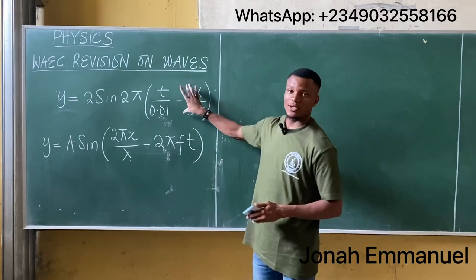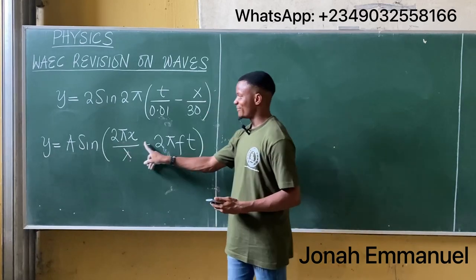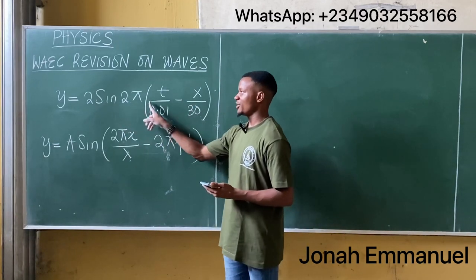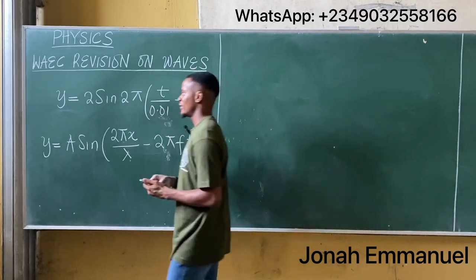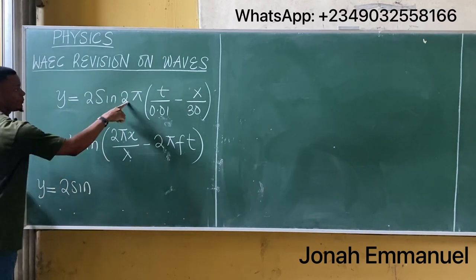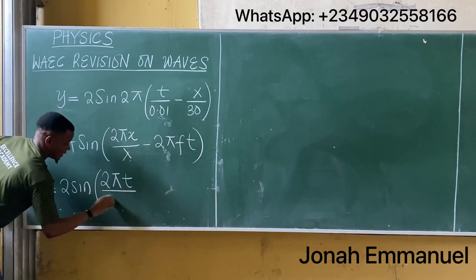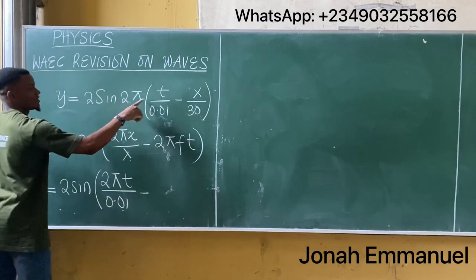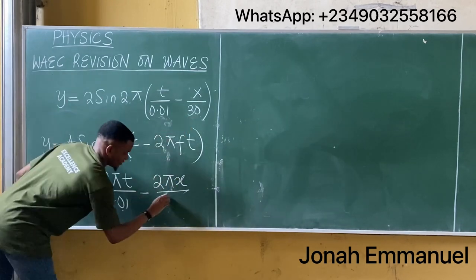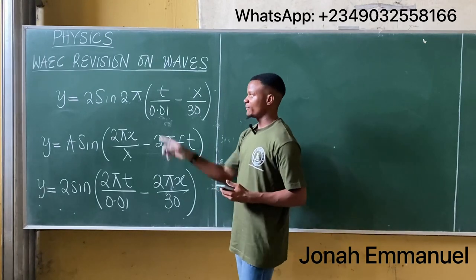Now compare the given equation with the general wave equation. Notice that 2π is inside the brackets in the general form, not outside. So I'll multiply through by 2π, moving it inside the brackets. This gives y = 2 sin(2πt/0.01 − 2πx/30).